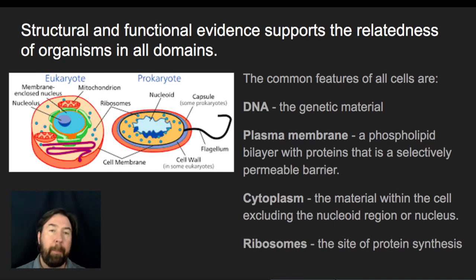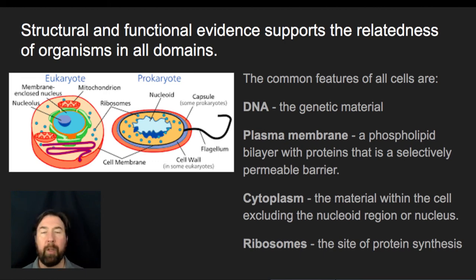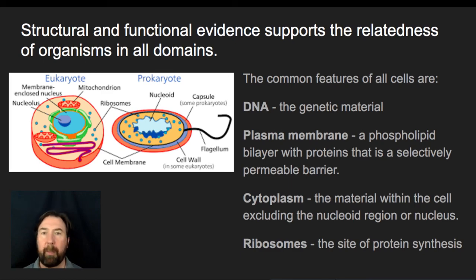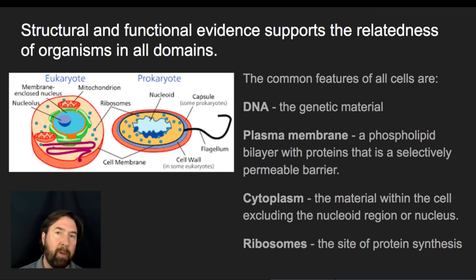We can look at their ribosomes and ask: are they similar or different? We look at their membranes and cell walls. Looking at those structures is ultimately what convinced us it wasn't appropriate to have one group called prokaryotes, but to have two separate groups that lack a nucleus. Because when we look at their genetic material — yes, they all have DNA, they all have plasma membranes, cytoplasm, and ribosomes — by looking at these we see a commonality supporting that they all relate back to a universal common ancestor.